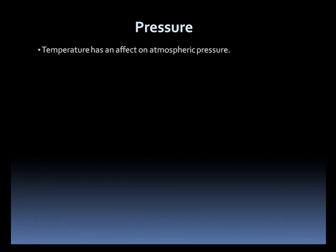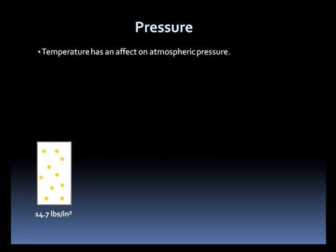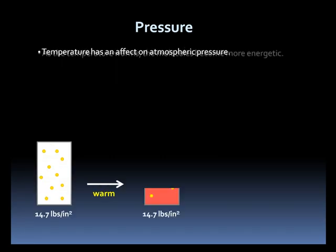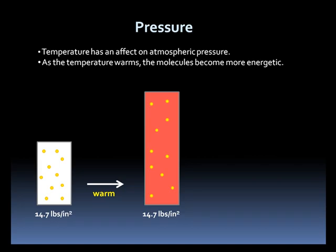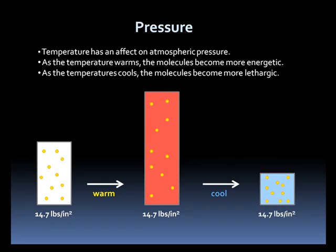Temperature has an effect on pressure. If we warm a column of air but keep the pressure the same, the column will expand as the molecules become more energetic. Conversely, if we cool the air, keeping the pressure constant, the volume will decrease as the air molecules become more lethargic.